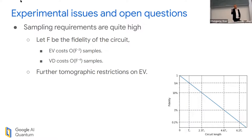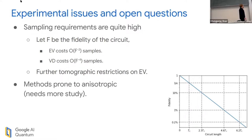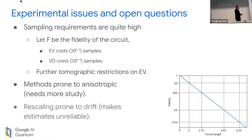Let me finish with notes on experimental issues and open questions. The sampling requirements of these error mitigation techniques are quite high. If I write F as the fidelity of my circuit, the best error mitigation strategy should have a cost of fidelity to the minus one. Echo verification has a cost of fidelity to the minus two. Virtual distillation has a cost of fidelity to the minus four, which is a pretty nasty cost.